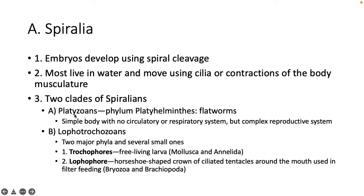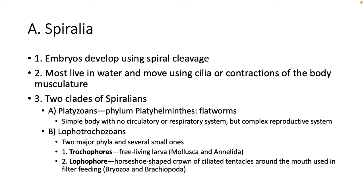Two clades of Spiralians: the Platozoans, which is phylum Platyhelminthes, also known as flatworms. Unique features include a very rudimentary body — no circulatory or respiratory system, but they do have a complex reproductive system. Then we'll jump into Lophotrochozoans: two major phyla — the Trochophores, which are your Mollusca and Annelids, and the Lophophores. Trochophores have free-living larvae in their life cycle. Lophophores are characterized by a horseshoe-shaped crown of ciliated tentacles around the mouth for filter feeding.